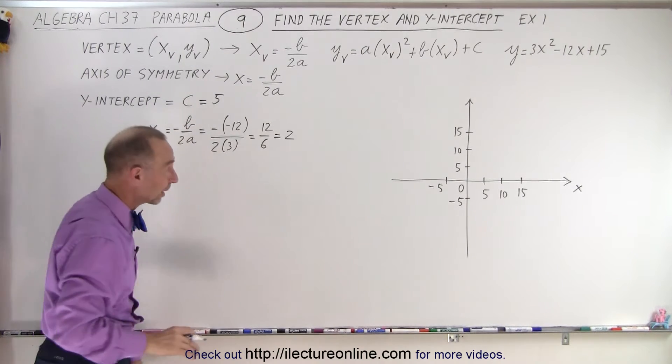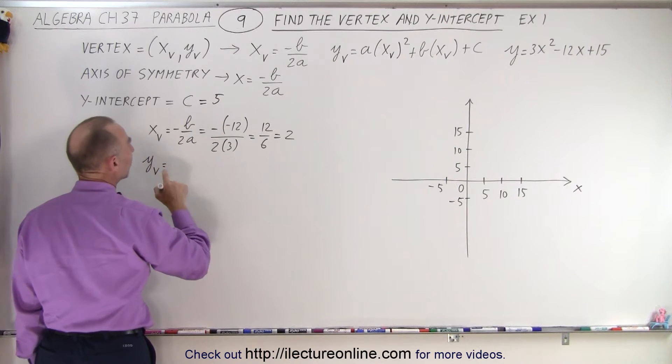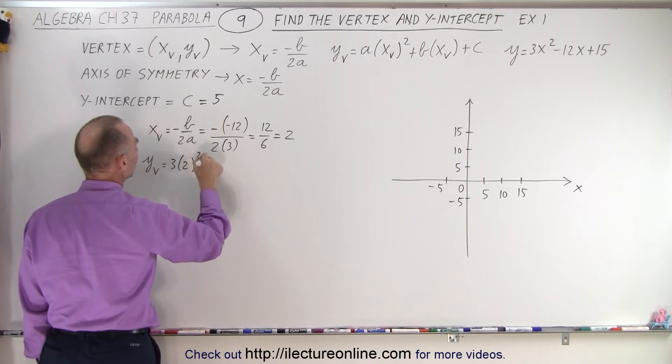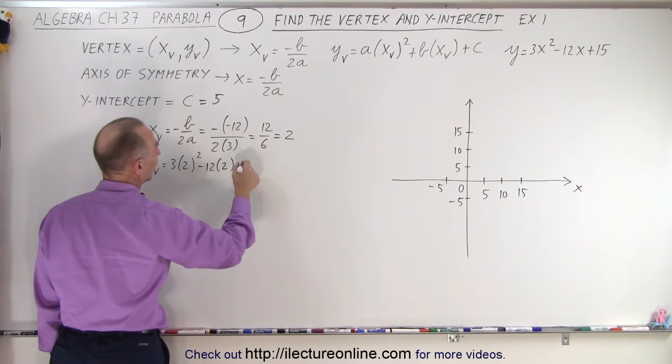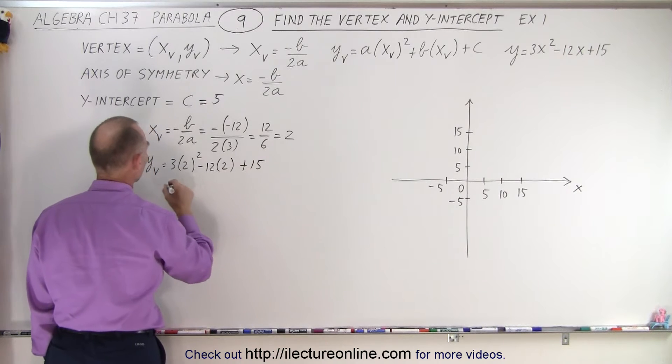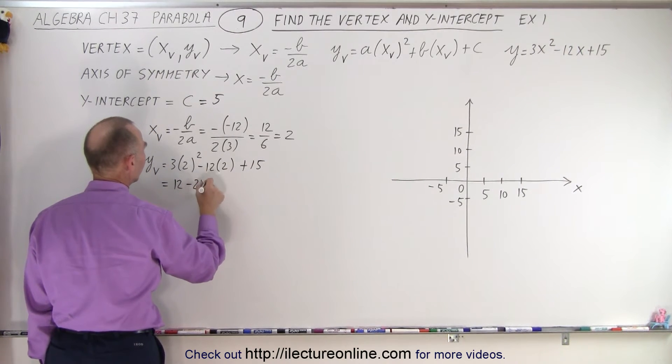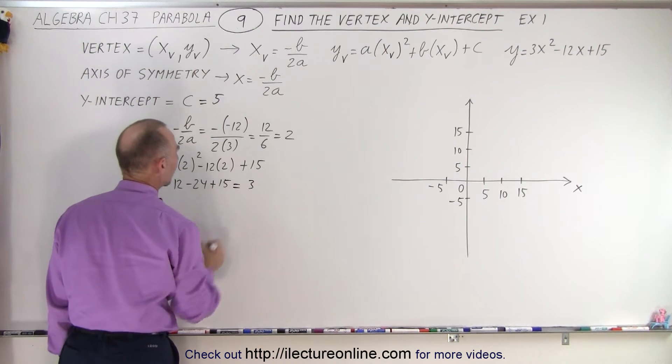So that's the x-coordinate of the vertex. To find the y-coordinate, y_v, we plug that value into our original equation: 3(2)² - 12(2) + 15. This equals 4(3) which is 12, minus 24, plus 15. That's -12 + 15, which is positive 3.